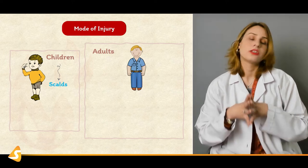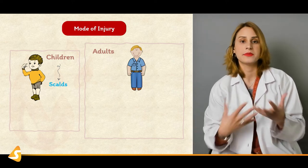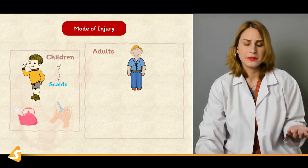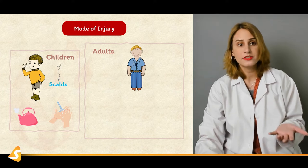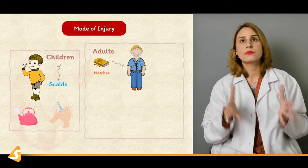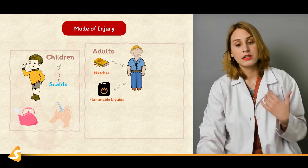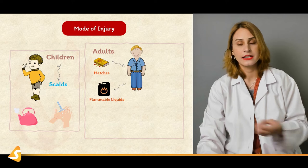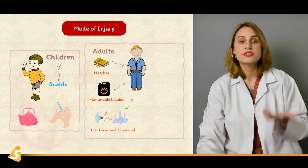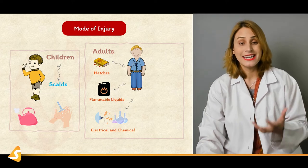In most cases, children usually have scald injuries because of hot water or hot liquids. Most of the time the injuries are in the form of scalds — it can be from hot water, hot beverages, a kettle injury, or a touch injury from an iron. When we talk about adults, mostly in a workplace setup, contact injuries would be common, and then there can be flammable liquids — those working in industrial settings where there are flammable liquids that result in burn injuries. Other modes include electrical and chemical injuries — electricians or people working in chemical or large industrial setups.